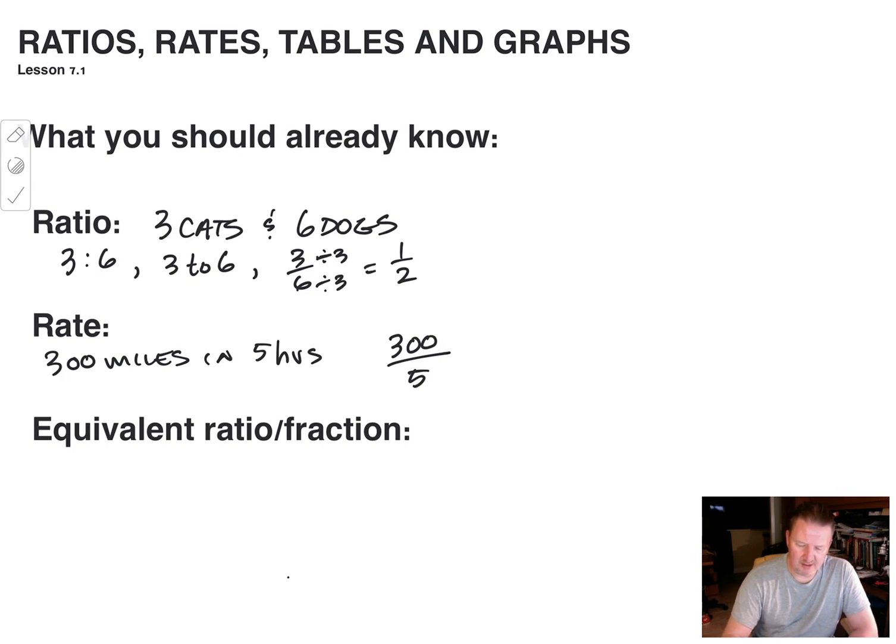And we can write that as a unit rate by getting a denominator of one. And we can do that by dividing that bottom number by that same bottom number. Five divided by five gives me one. 300 divided by five gives me 60. So that tells me that we traveled at an average rate of 60 miles per hour. Okay. So 60 miles in one hour.